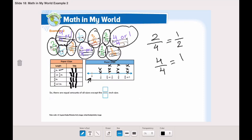So there are equal amounts of all sizes except which one. They are all equal except which paper clip? Yes, the one that is near to one quarter of an inch.